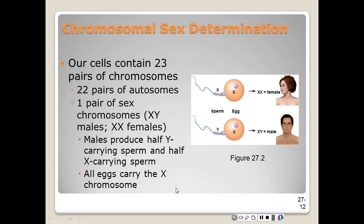The males produce half Y-carrying sperm and half X-carrying sperm. Of course, all eggs are going to carry that X chromosome. So basically, it's up to the male to determine whether there's going to be a female child or a male child — that's what it's trying to tell you. It is up to the male, based on his chromosomes, not the female.